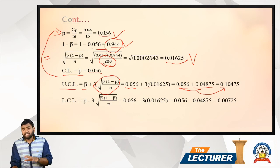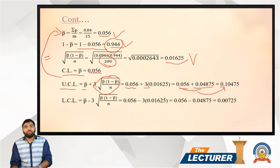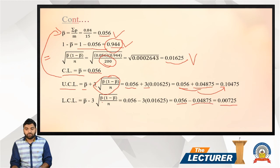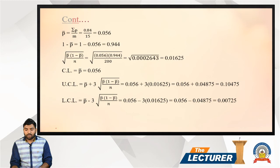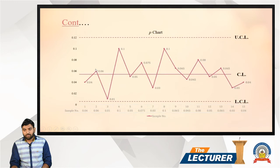The lower control limit (LCL) uses the same calculation but with a minus sign instead of plus. So LCL = p-bar − 3 × sqrt(p-bar × (1 − p-bar) / n) = 0.056 − 0.04875 = 0.00725. Now we are ready to plot all values on the chart.